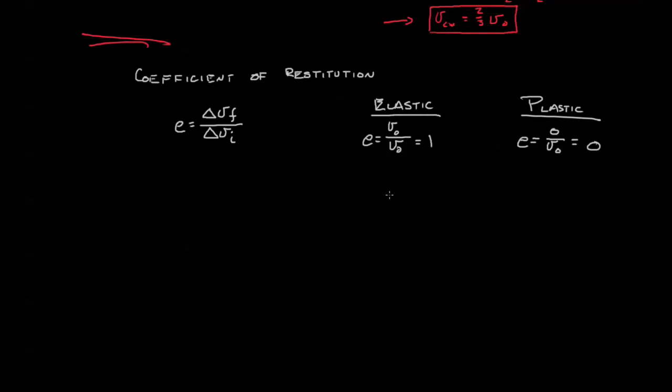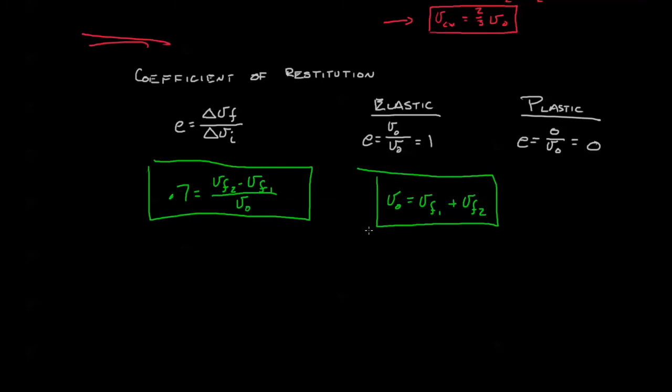Let's bring that down here. Coefficient of restitution. Our first equation is V0 equals the final velocity of one plus the final velocity of two. Now let's use our coefficient of restitution to come up with our second equation. We know that E equals 0.7. The final relative velocity is going to be velocity of two minus velocity of one. And the initial relative velocity is simply V0. Cart one was coming with an initial velocity. Now we have something we can work with. Two equations, two unknowns, we can solve. Go ahead and put the video on pause, see what you come up with, and when we regroup we'll compare answers.